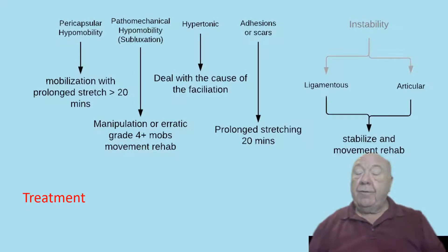Okay, so a quick overview of the treatment. Along the top you can see the dysfunctions that we're going to find: pericaptor hypomobility, pathomechanical hypomobility, hypertonicity causing hypomobility, adhesions or scars, and instability. We're going to have a quick look to see the principles of treatment of these with manual therapy.